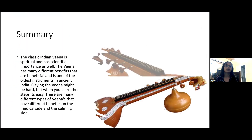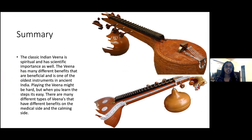Summary: the classic Indian Veena is spiritual and has scientific importance as well. The Veena has many benefits and is one of the oldest instruments in ancient India. Playing the Veena might be hard, but when you learn the steps it gets easier and easier. There are many different types of Veenas that have different benefits on the medical side and the calming side.